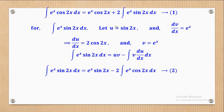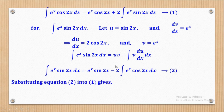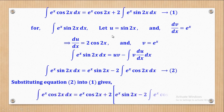So u·v: u is sin(2x) and v is e^x, so the product will be e^x sin(2x). Then minus the integral of v·du/dx — v is e^x and du/dx is 2 cos(2x), so the product will be 2e^x cos(2x). You realize that this integral is the same as the one originally given. Comparing the two, they are the same integral — in other words, the given integral has appeared again. We shall substitute equation 2 into equation 1 to handle this.